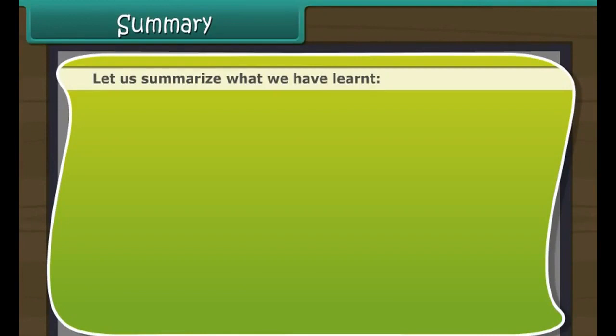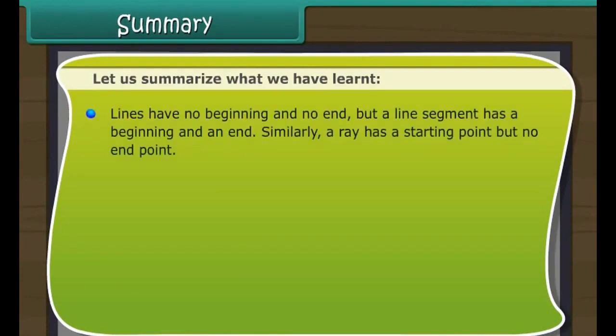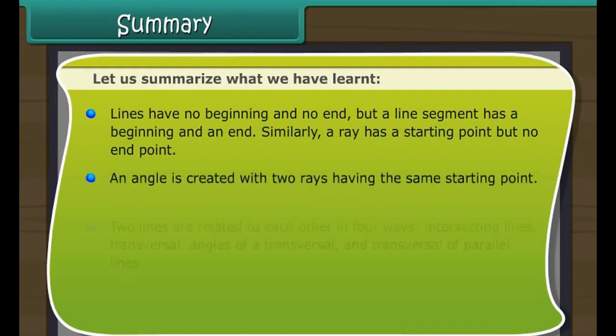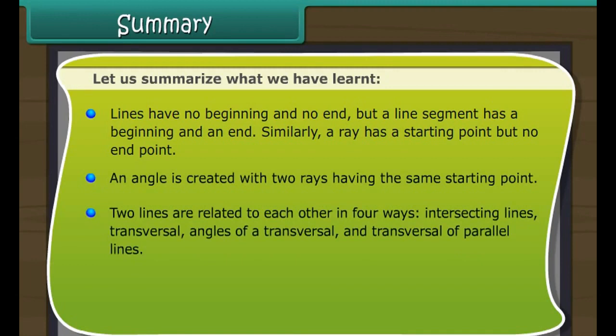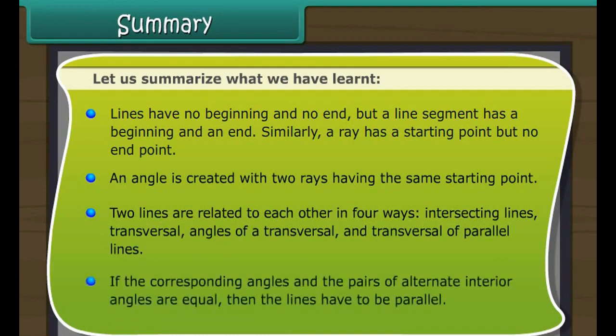Let us summarize what we have learnt. Lines have no beginning and no end, but a line segment has a beginning and an end. Similarly, a ray has a starting point but no end. An angle is created with two rays having the same starting point. Two lines are related to each other in four ways: intersecting lines, transversal, angles of a transversal, and transversal of parallel lines. If the corresponding angles and the pairs of alternate interior angles are equal, then the lines have to be parallel.